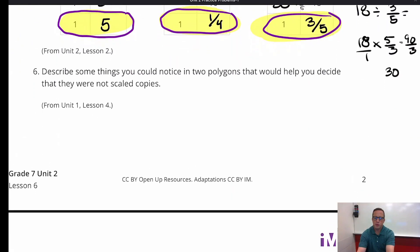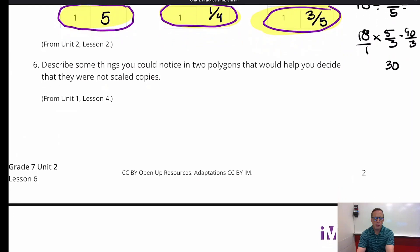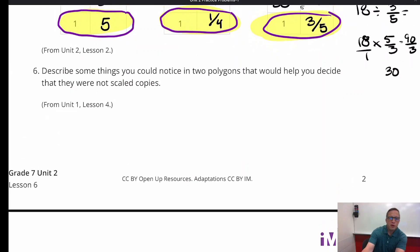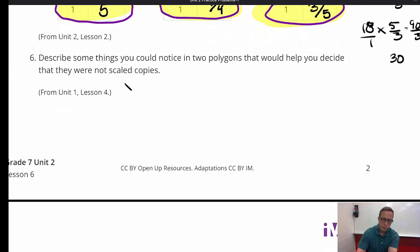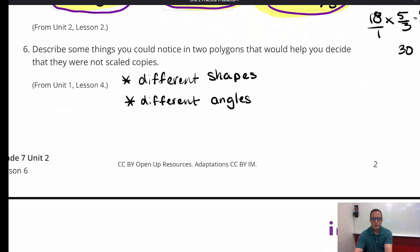Okay, number six. Describe some things you would notice in two polygons that would help you decide that they were not scaled copies. Well, I mean, two obvious ones would be totally different shapes. You know, if they're completely different shapes. Because it doesn't say the polygons are the same shape. It just says they're polygons. So different shapes would automatically exclude them from being scaled copies. Also, if they had different angles. You got a shape with all right angles, and then all of a sudden you have a shape with some obtuse angles or acute angles. Then yeah, you can say that's definitely not a scale copy.